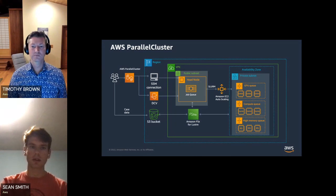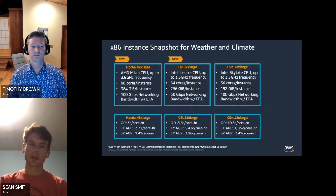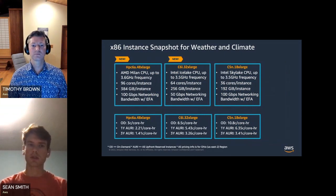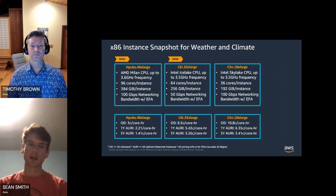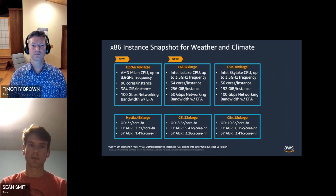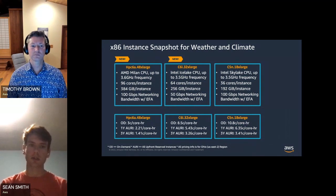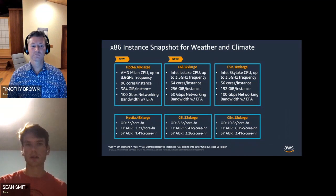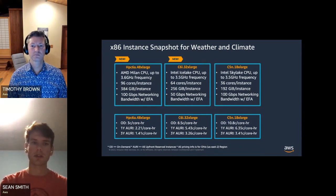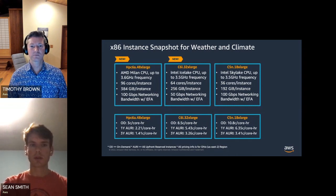These HPC6a instances do a great job on parallel MPI-style workloads and we recommend them from a price-performance perspective. You get to choose your architecture including compute type — there are almost 200 different instance types, but sticking to HPC6a gives the best price-performance for CPU-heavy workloads. If you need an Intel-based instance, an Ice Lake-based instance with 64 cores offers better per-core performance than the Milan instances, but at a premium.